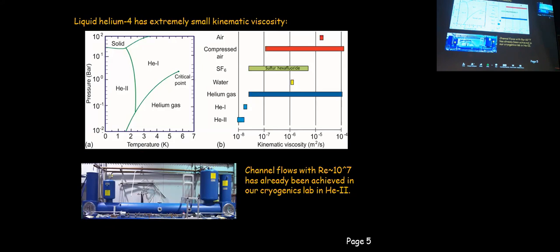Liquid helium is very useful due to its special properties. There are three fluid phases: helium-1 (the normal liquid phase, a classical Navier-Stokes fluid), the superfluid phase helium-2 at low temperature, and also the gas phase. Both helium-1 and helium-2 have extremely small kinematic viscosity compared to other conventional fluid materials — about three orders of magnitude smaller than air. This means with helium-1 and helium-2, one can easily generate very high Reynolds number flows, even with compact flow facilities. Indeed, in our lab my colleague Steve Vanskyber produced a pipe flow with Reynolds number as high as 2×10^7.